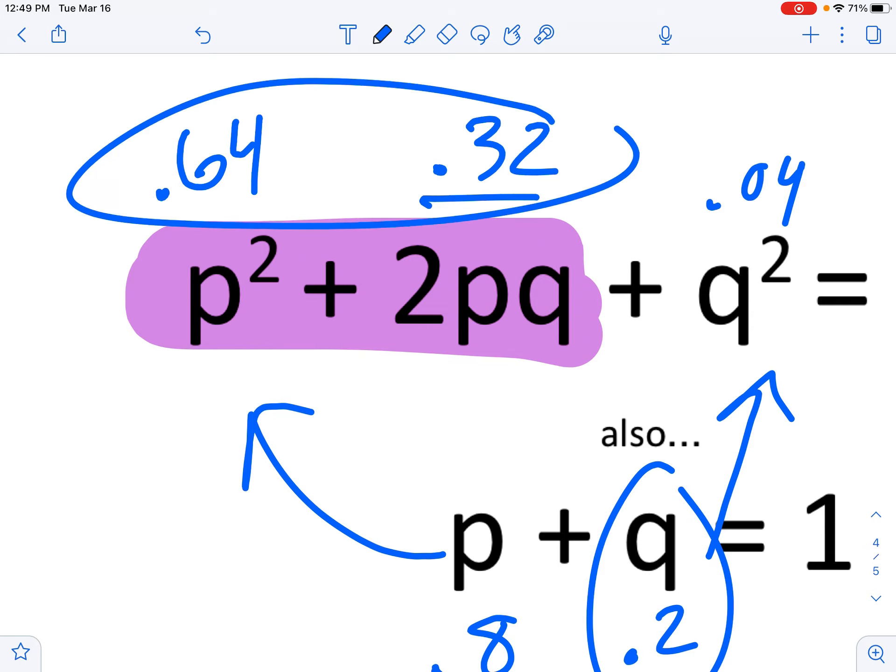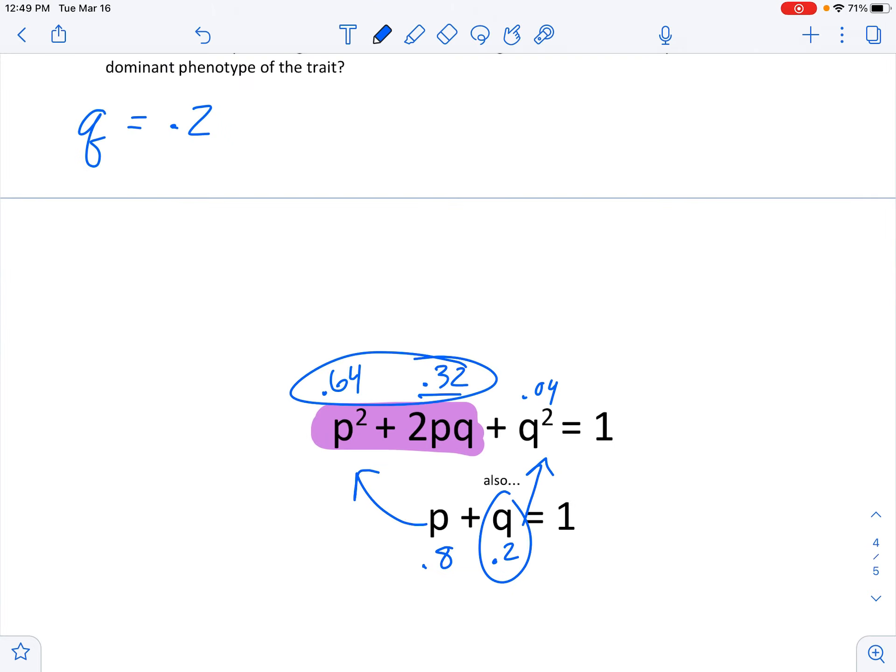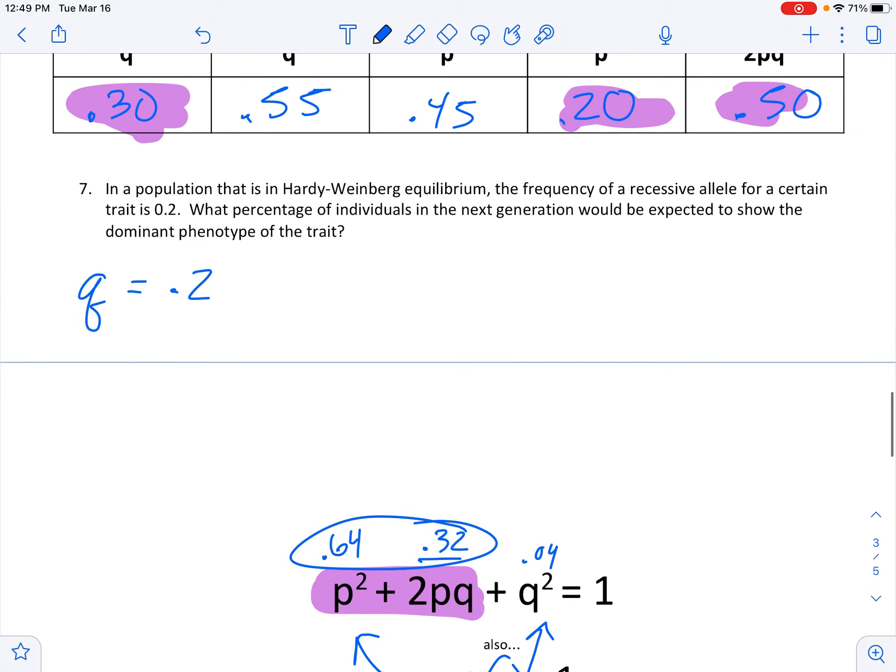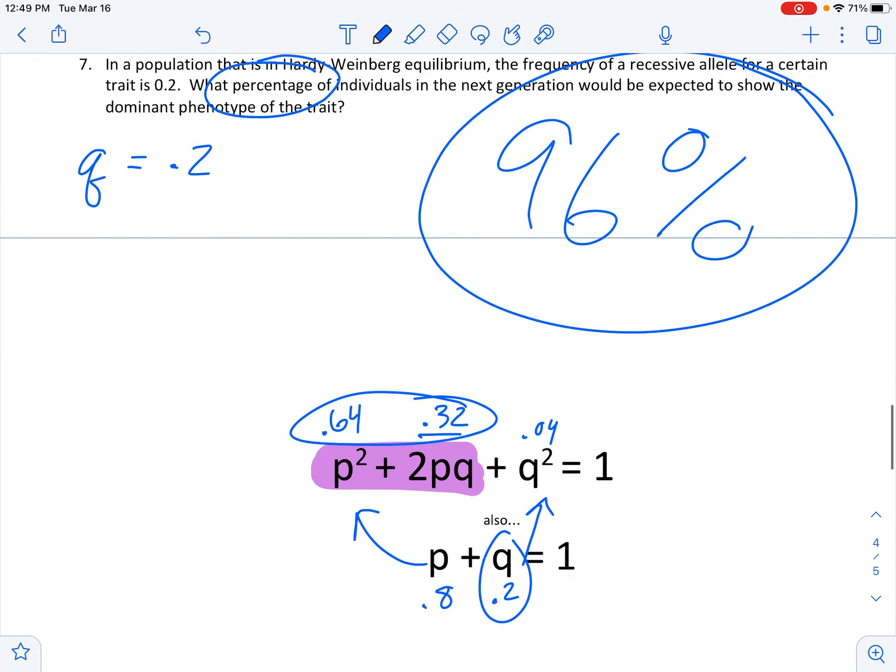So add these up. 0.32 plus 0.64 equals 0.96. And so what percentage? This would be 96% of individuals would show the dominant phenotype of the trait.